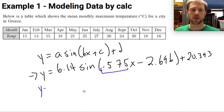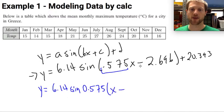So this is going to stay the same. Y equals 6.14 sine of 0.575 times the quantity X minus. Now how do I figure out what this is? Well, if I divide out the 0.575, I'm going to have to divide negative 2.696 by 0.575. So why don't I do that?